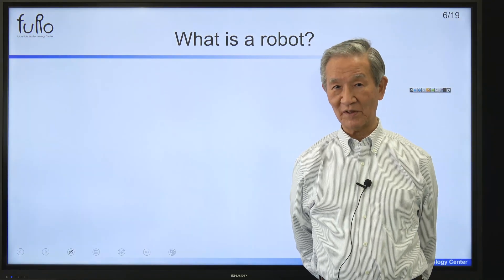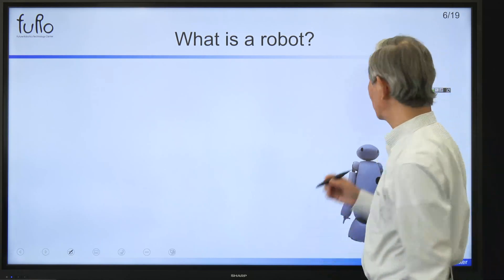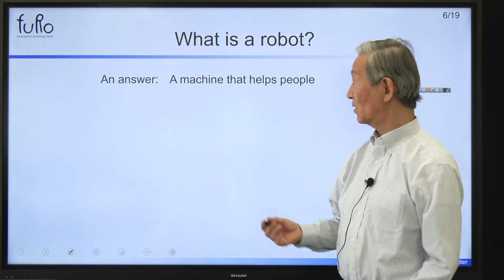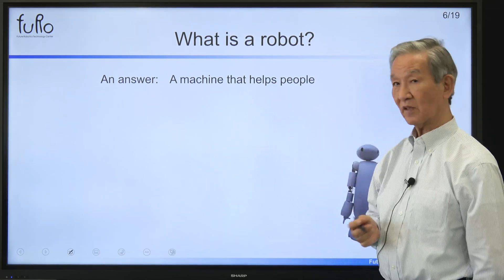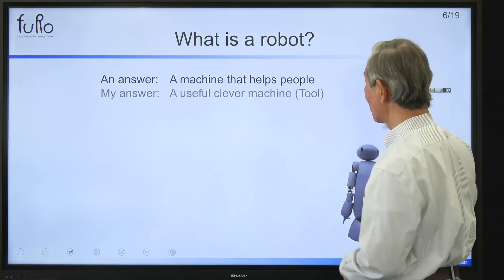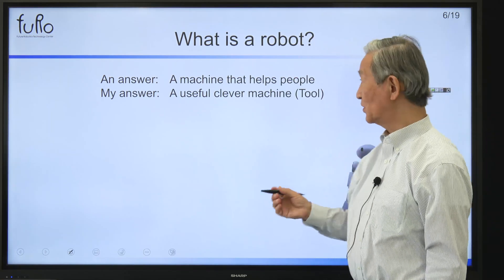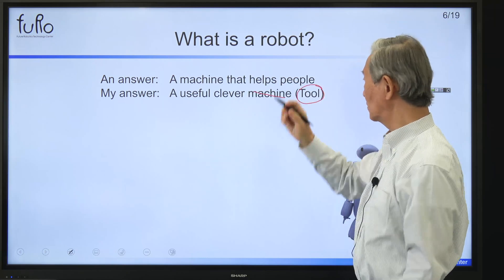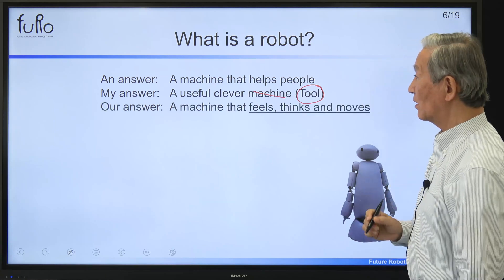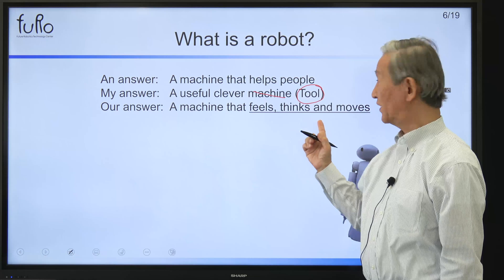The next thing is: what is a robot? Everybody has a different idea as to what a robot is. And probably one of the most common understandings is a machine that helps people — not a terminator. My answer is a robot is a useful, clever tool. And our answer at FURO is that a robot is a machine that feels, thinks, and moves.